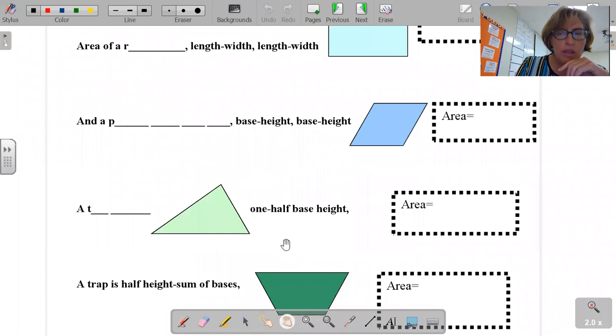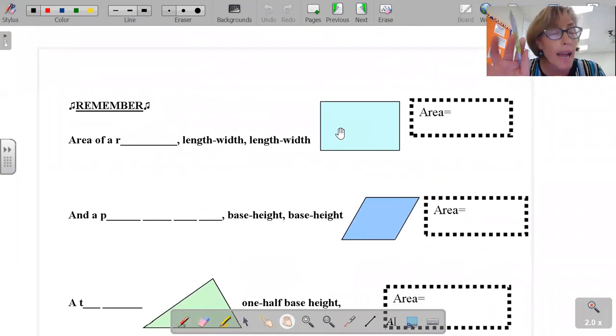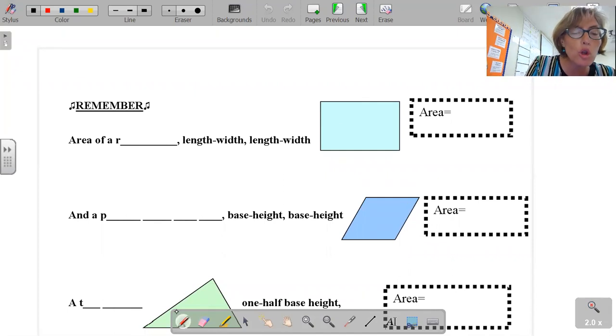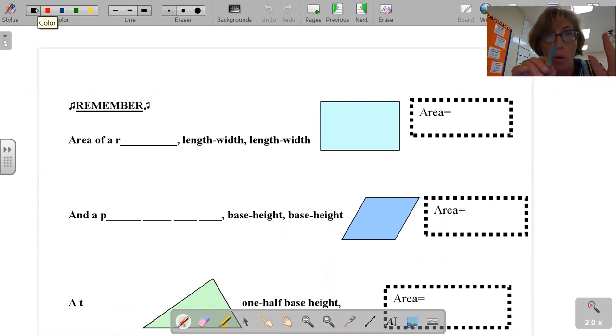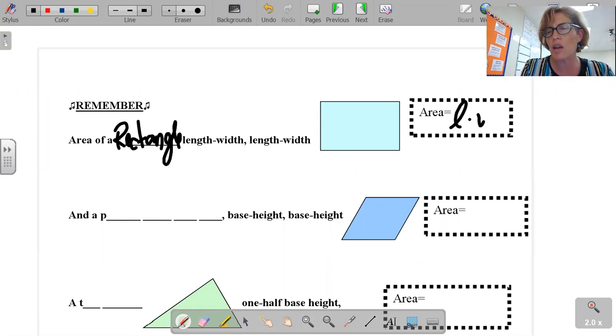We're going to recap these equations now. Can you always look these equations up in your reference book? Yes, absolutely. However, learning to memorize these equations really helps your brain be more efficient. So we're going to quickly go through this. Area of a rectangle: length times width.